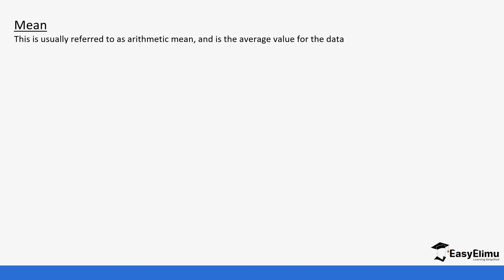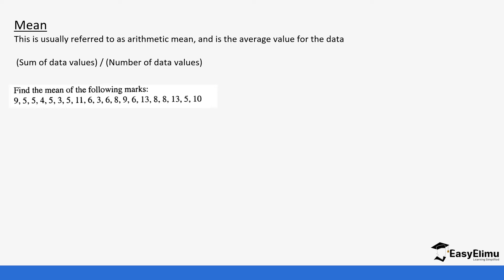Mean is usually referred to as arithmetic mean — you're going to hear that term. It is the average value of the data. What we do is take the sum of the data values and then divide by the number of data values.